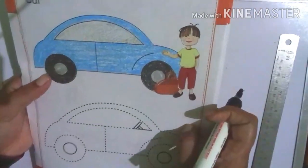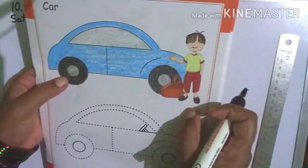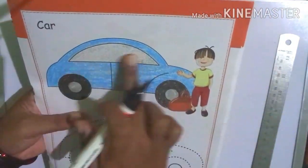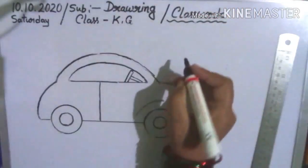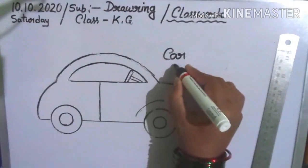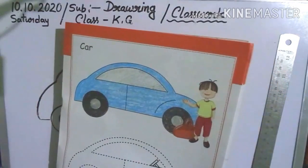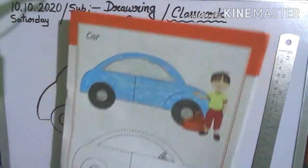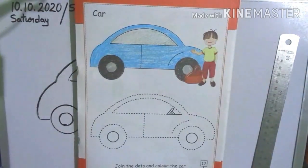So children put the color black, gray, and blue. Gray also. So children, this is a car. So join the dots and color the car. So practice.